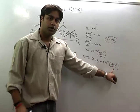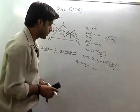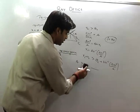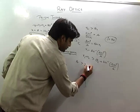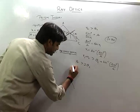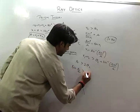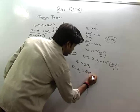Sin inverse of 1 upon mu. What is this? Theta c. That means that a will be equal to twice of theta c. That means that sin of a by 2 is greater than sin theta c.